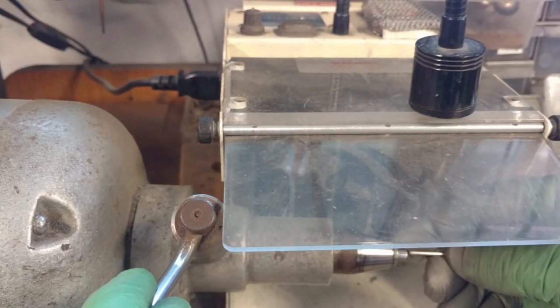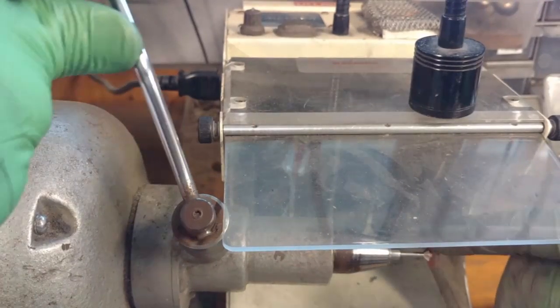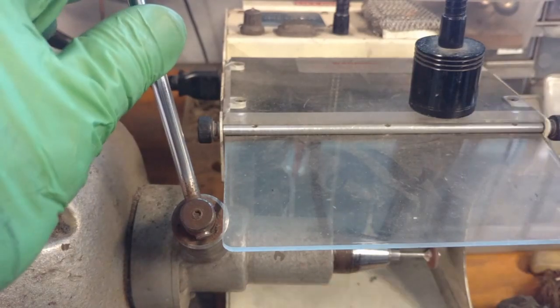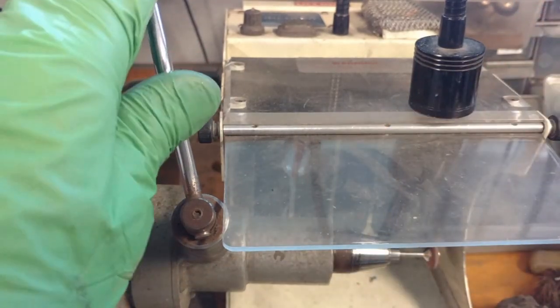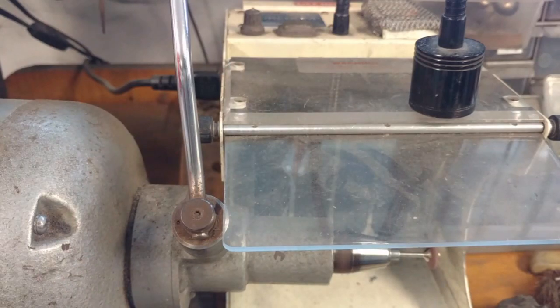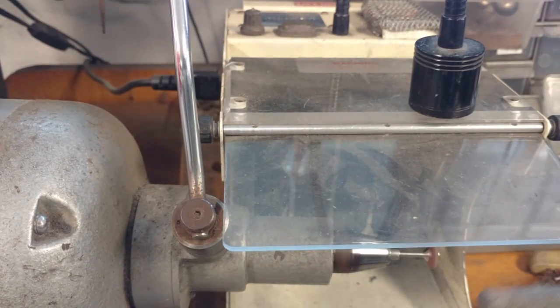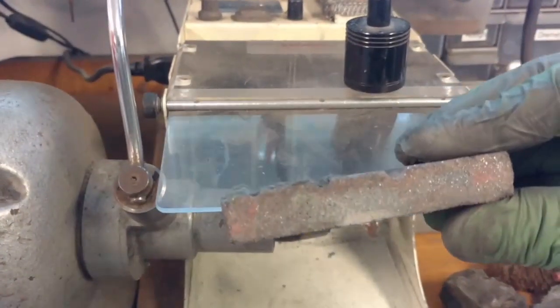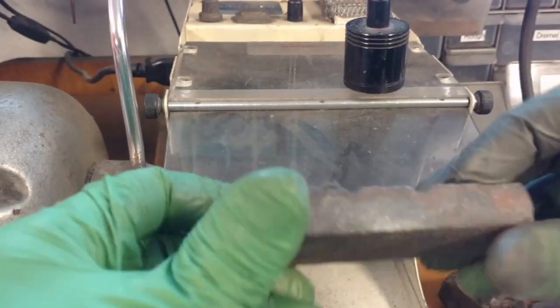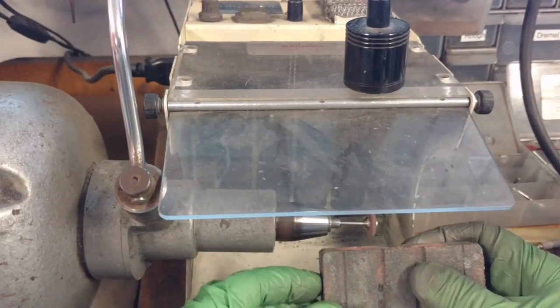I could take that piece off and thread on another one. That takes time. If I'm in a hurry and you happen to have one of these grinding blocks here, these are used for truing wheels.